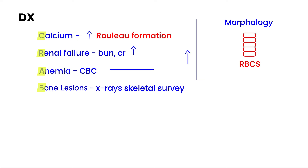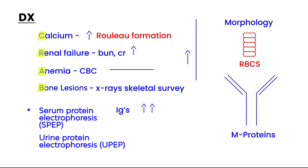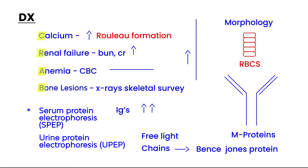Another very important test is serum protein electrophoresis (SPEP) or urine protein electrophoresis (UPEP). These tests detect the immunoglobulins that are present in high quantity because the plasma cells are malignant. If seen in full form, they're called M proteins; if found as free light chains alone, they're called Bence Jones protein. About 80–90% of the time it will be an M protein on SPEP/UPEP, and Bence Jones protein will be seen about 10–20% of the time.